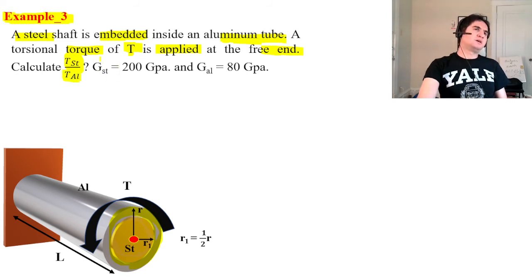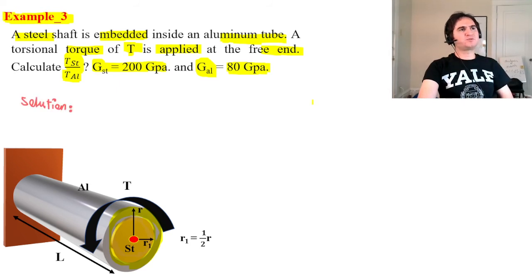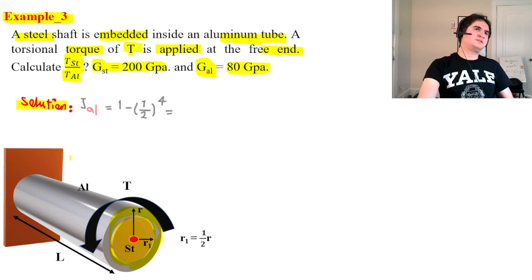If we know the rigidity modulus of steel is 200 GPa and rigidity of aluminum is 80 GPa. Let's approach the problem. As you can see they are bonded together. First of all, J of aluminum outer part is 1 minus R1 is half of R2. So 1 over 2 to the power of 4. So that's 15 over 16.